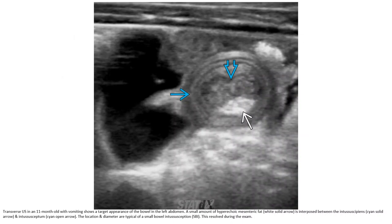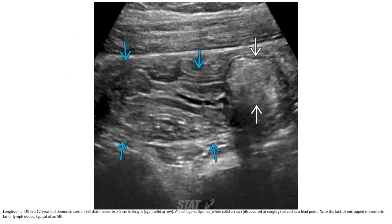On ultrasound in an 11-month-old with vomiting, a target appearance of the bowel is seen in the left abdomen. A small amount of hyperechoic mesentery wedge is interposed between the intussusceptum and intussuscipiens. The location and diameter are typical of a small bowel intussusception, which resolved during the study.